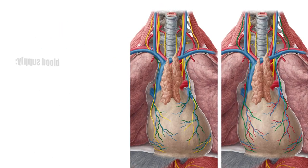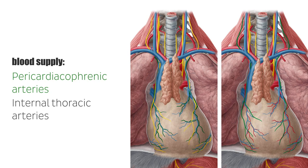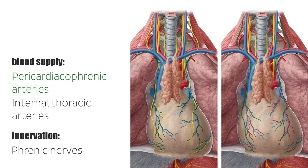The blood supply of the pericardium comes from the pericardiacophrenic arteries and the internal thoracic arteries. The internal thoracic veins are responsible for the venous drainage of the area. The innervation of the pericardium is governed by several different branches, including the phrenic nerves, which give sensory fibers that control pain sensation, and the sympathetic trunks which carry vasomotor fibers.